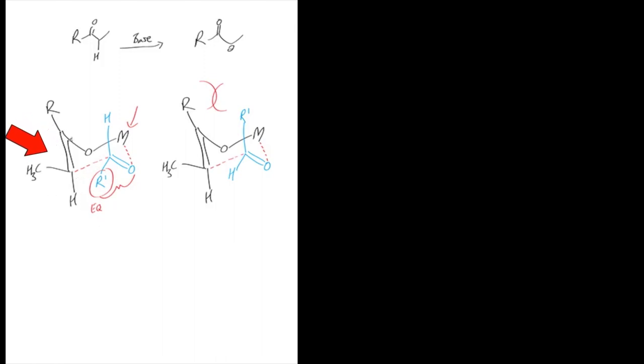Now it's very important if you're drawing the aldehyde structure to put the hydrogen in the axial position and that will lower the energy of the whole system and put the R group in the equatorial position like that. Now comes the tricky part.